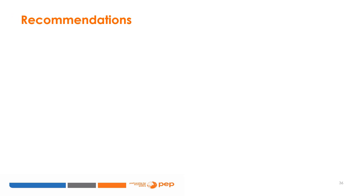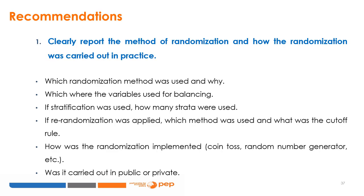This section presents practical recommendations on how to carry out random allocation, especially in small sample settings. The first recommendation is to clearly report the method of randomisation and how it was carried out in practice. In particular, it is important to state which randomisation method was used and why, which variables were used for balancing, how many strata were used if stratification was applied, which method and cut-off rule were used if re-randomisation was applied, and how the randomisation was implemented — by coin toss, random number generator, etc. — and whether it was carried out in public or private.